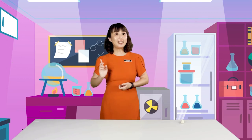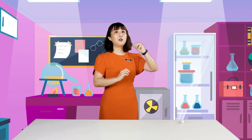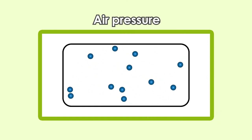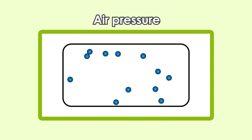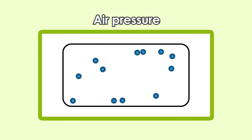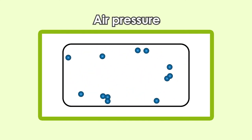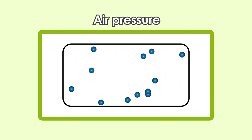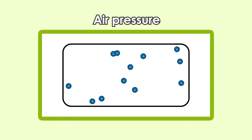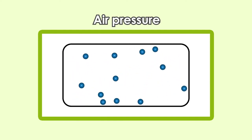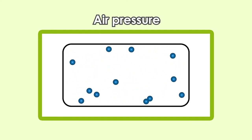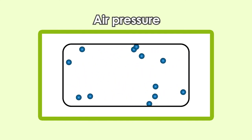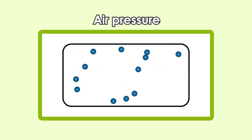Boys and girls, please look at this diagram. This can make you understand better. The gas particles are moving faster and randomly in the container. It hits the container wall, then bounces back. So, the gas pressure exists when the gas particles hit the container wall.